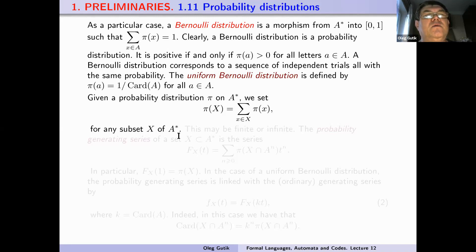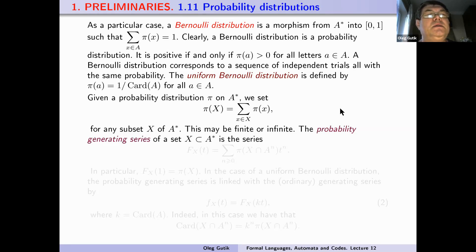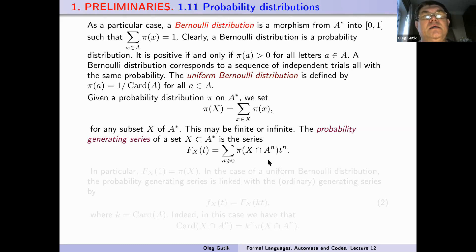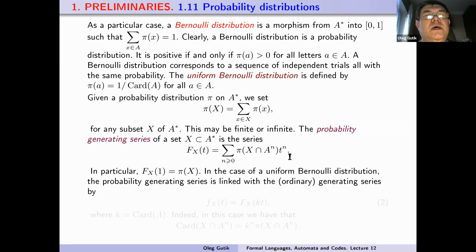Given the probability distribution p on a free monoid A-star, we set p(X) equal to the sum of p(x) where x belongs to X, for any subset X of the free monoid A-star. This may be finite or infinite. The probability generating series of a set X from the free monoid over alphabet A is the following series: f_X(t) equals the sum of p(X ∩ A^n) multiplied by t^n, where n belongs to the set of non-negative integers.